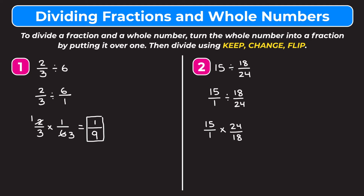I'll simplify 24 over 18 first by dividing top and bottom by 6: 24 divided by 6 is 4, and 18 divided by 6 is 3. Now I have 15 over 1 times 4 over 3. I can cross-reduce 15 and 3 by dividing both by 3: 15 divided by 3 is 5, and 3 divided by 3 is 1. Multiplying straight across: 5 times 4 on top gives 20, and 1 times 1 on the bottom gives 1 — so 20 over 1 is just 20.